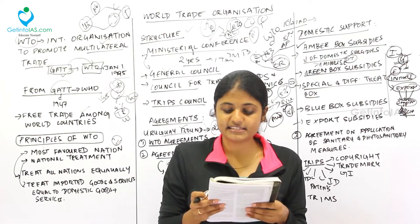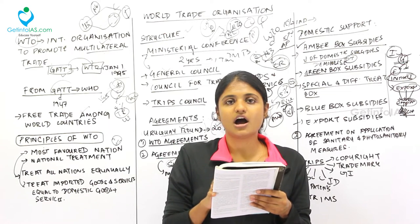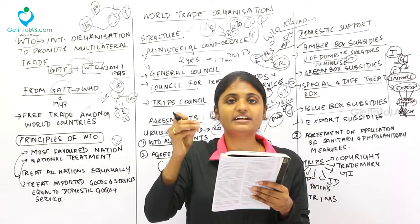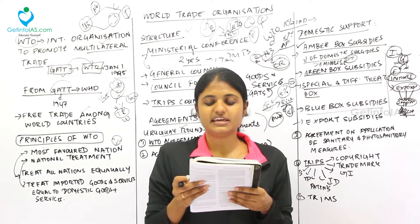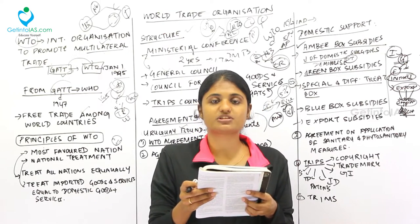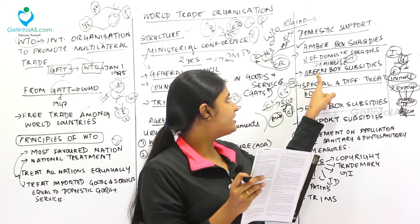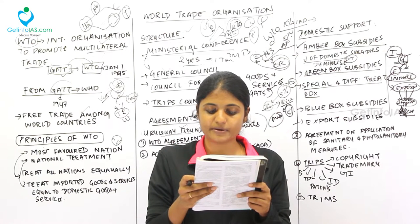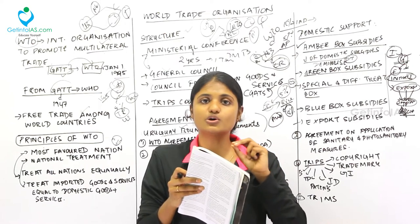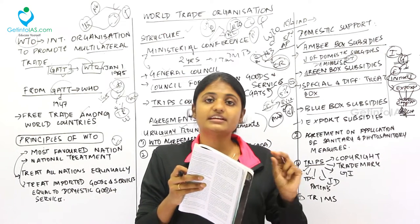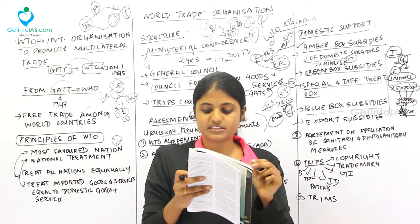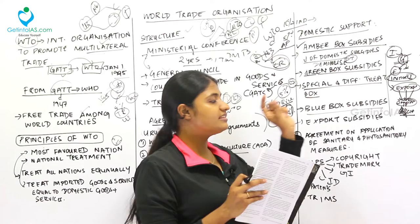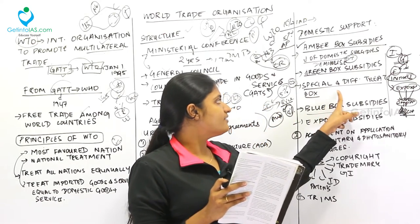The Special and Differential Treatment (SND) Box includes assistance essential for rural development and upliftment of poor farmers. While Green Box subsidies are available to all countries, SND Box subsidies are not available to developed countries. These include government assistance for agriculture and rural development programs in developing countries, and agricultural investment subsidies generally available to low-income or resource-poor producers in developing countries.